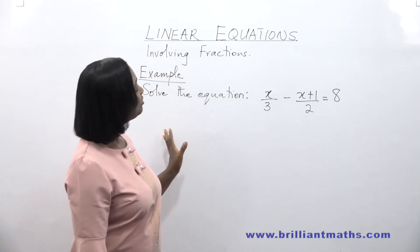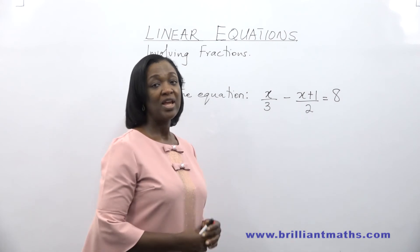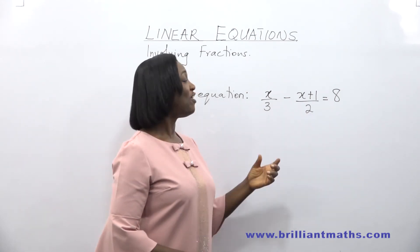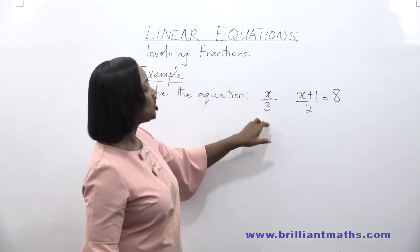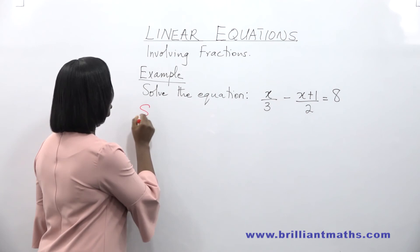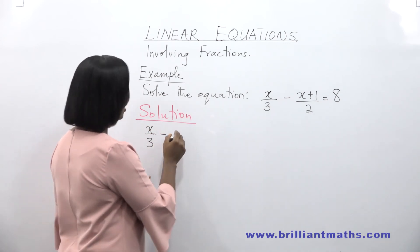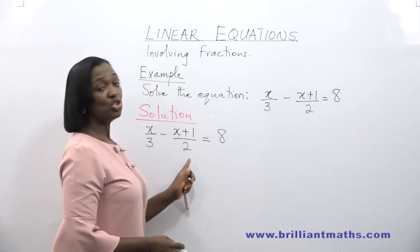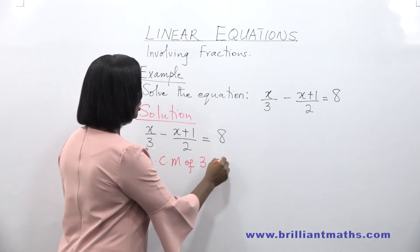In this example, we want to solve an equation that has two fractional terms: x over 3 and (x plus 1) over 2. The target in solving equations that involve fractions is to eliminate the denominators. The first step is to find the LCM of the denominators, then multiply each term in the equation by the LCM. So we have x over 3 minus (x plus 1) over 2 is equal to 8.